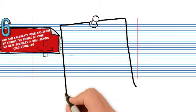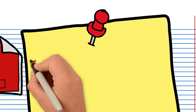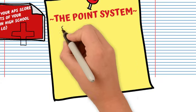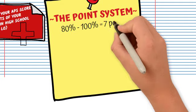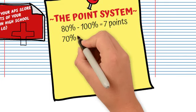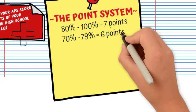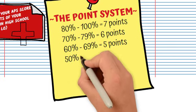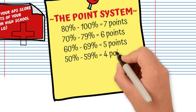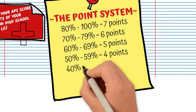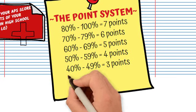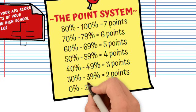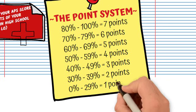So the most important part — the actual point system. The point system goes as follows: 80% to 100% equals seven points; 70% to 79% is six points; 60% to 69% is five points; 50% to 59% is four points; 40% to 49% is three points; 30% to 39% is two points; and 0% to 29% is one point.